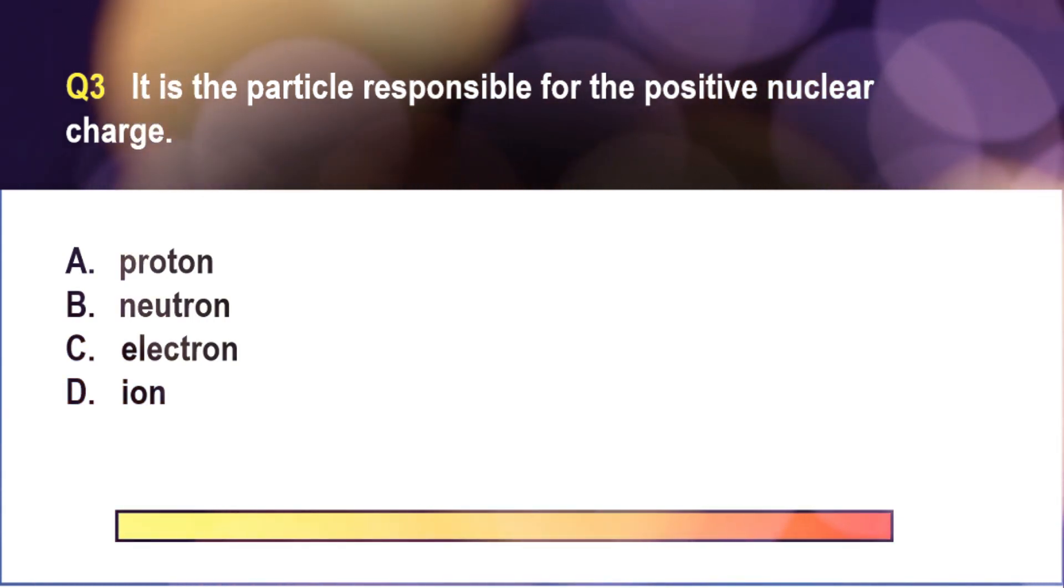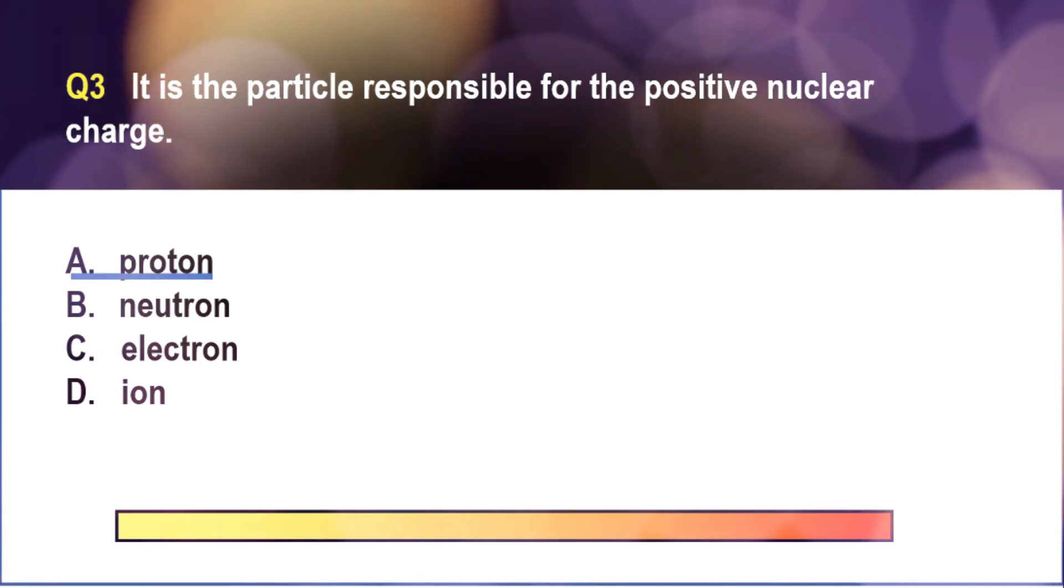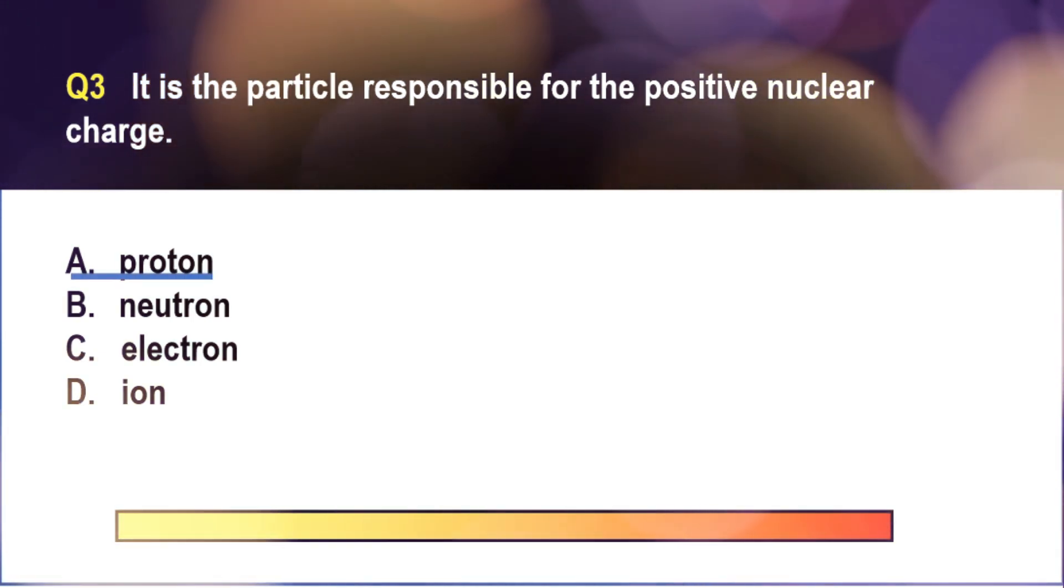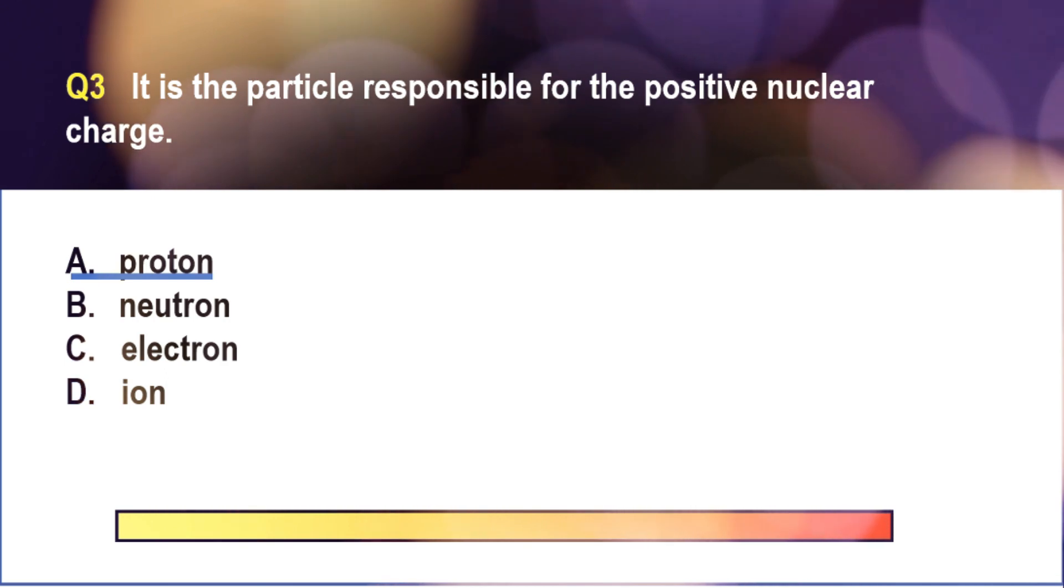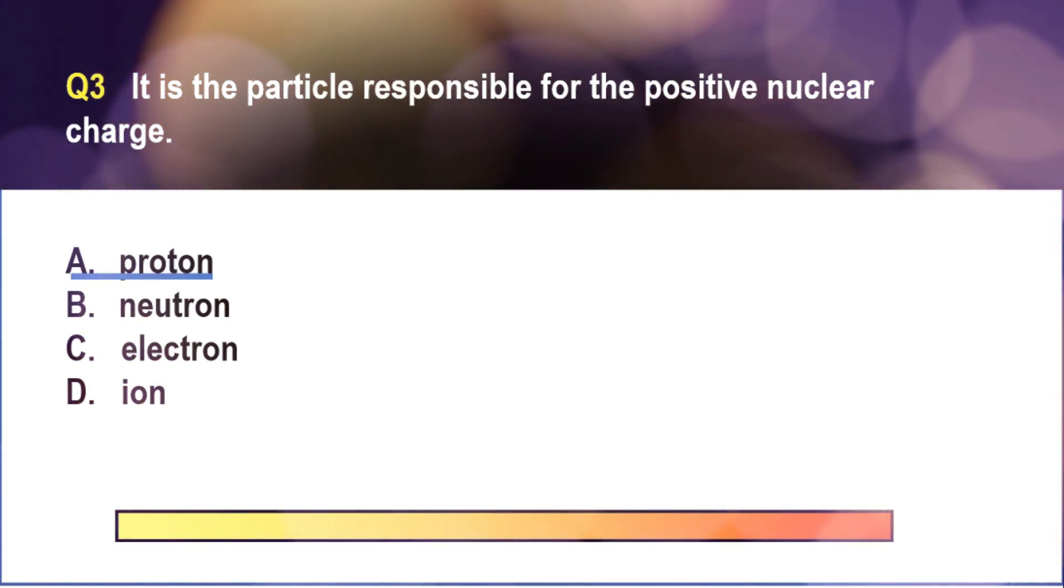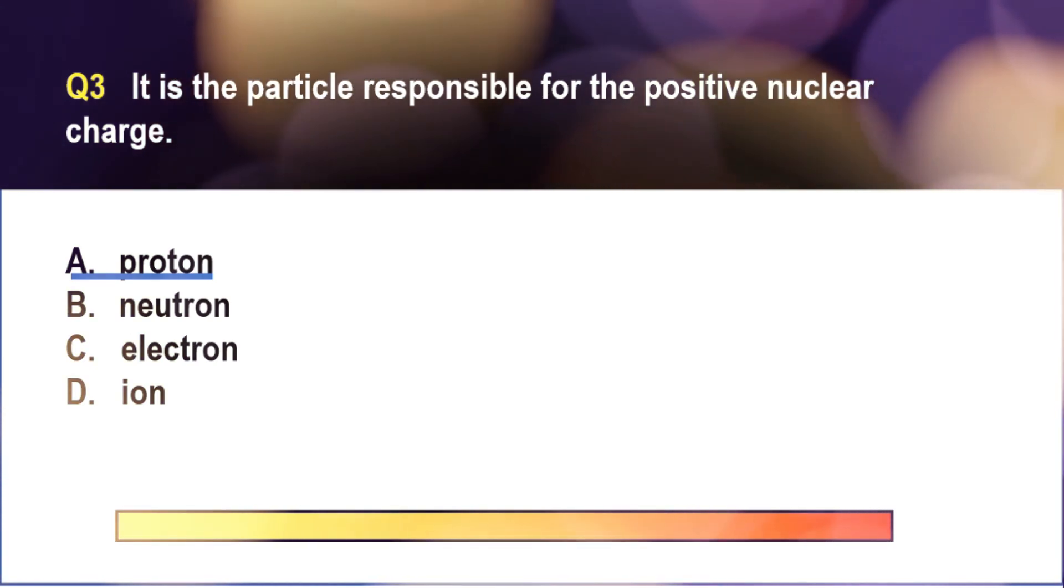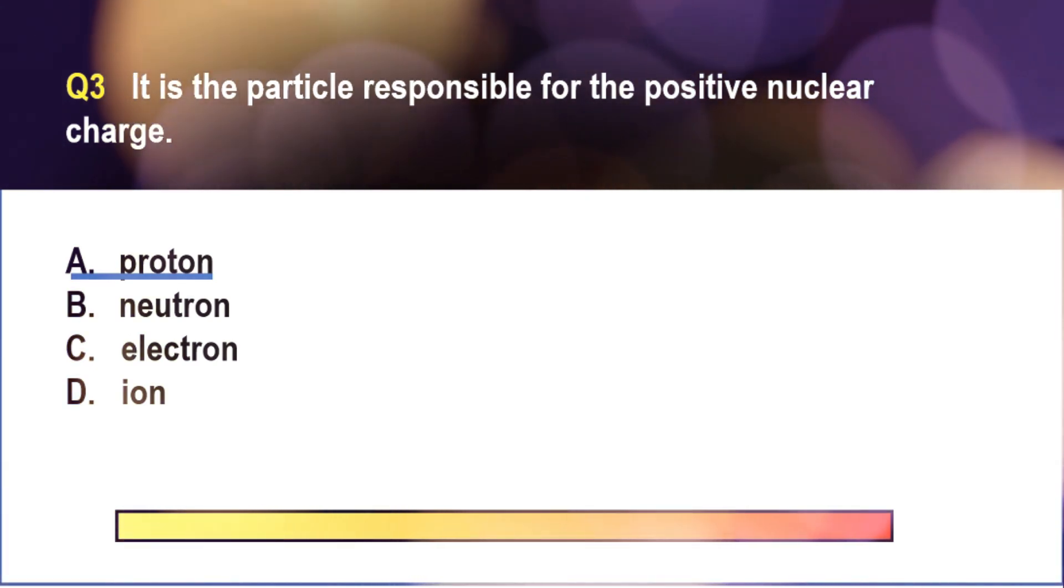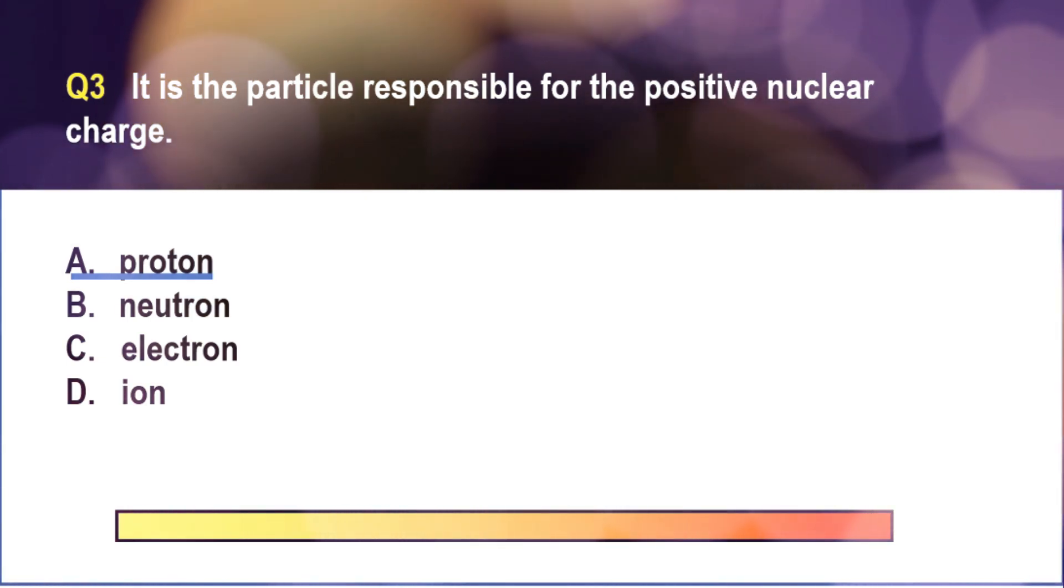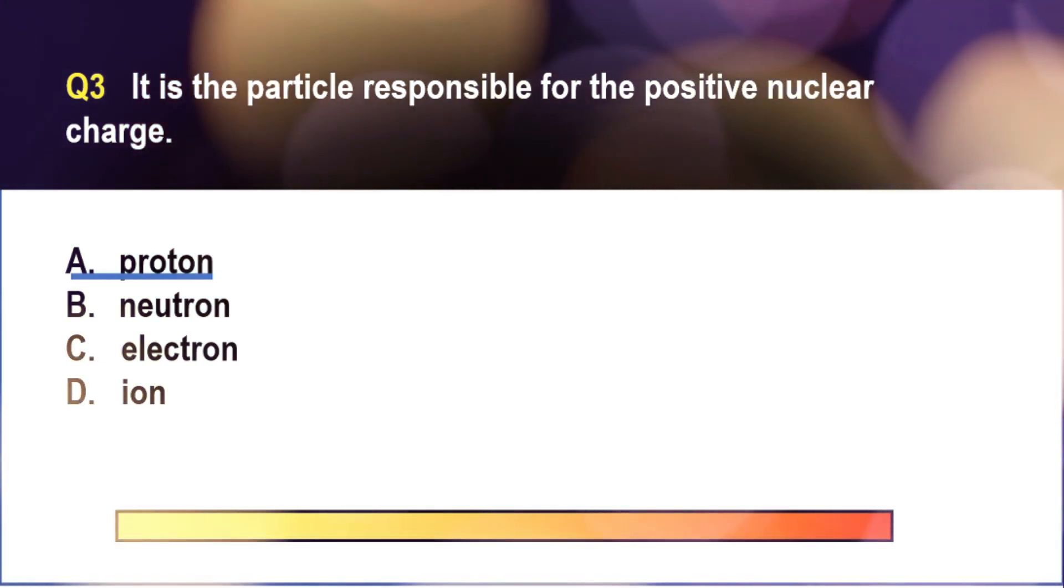The correct answer is letter A. Remember in the nucleus of the atom, you have the protons and the neutrons. Since the neutrons are neutral, then the protons in effect give the nucleus a positive charge. This is another basic concept that you have to understand. If you master these concepts, you will never ever get confused.